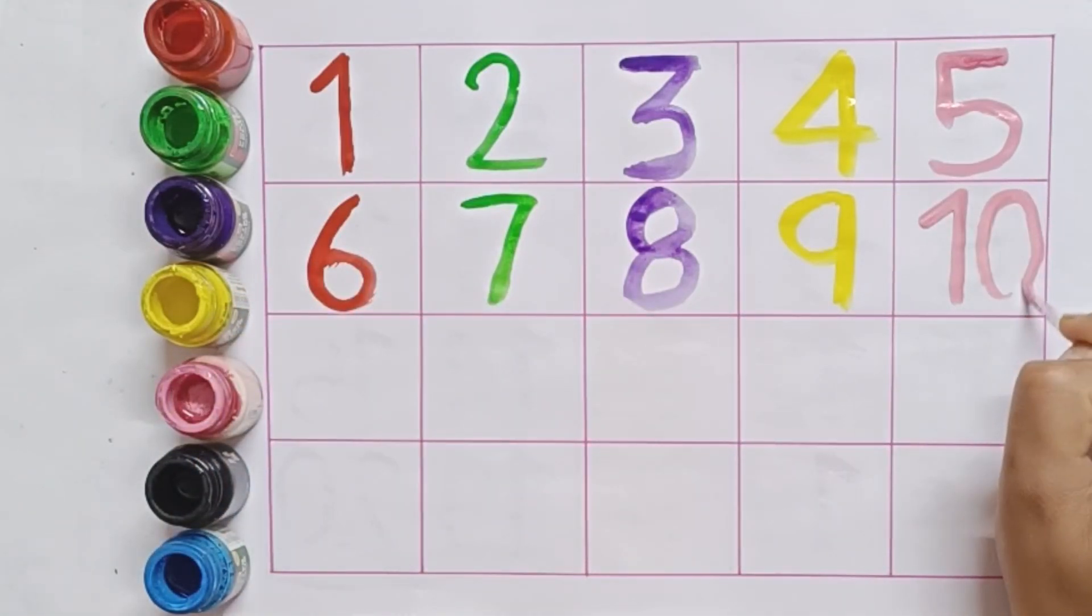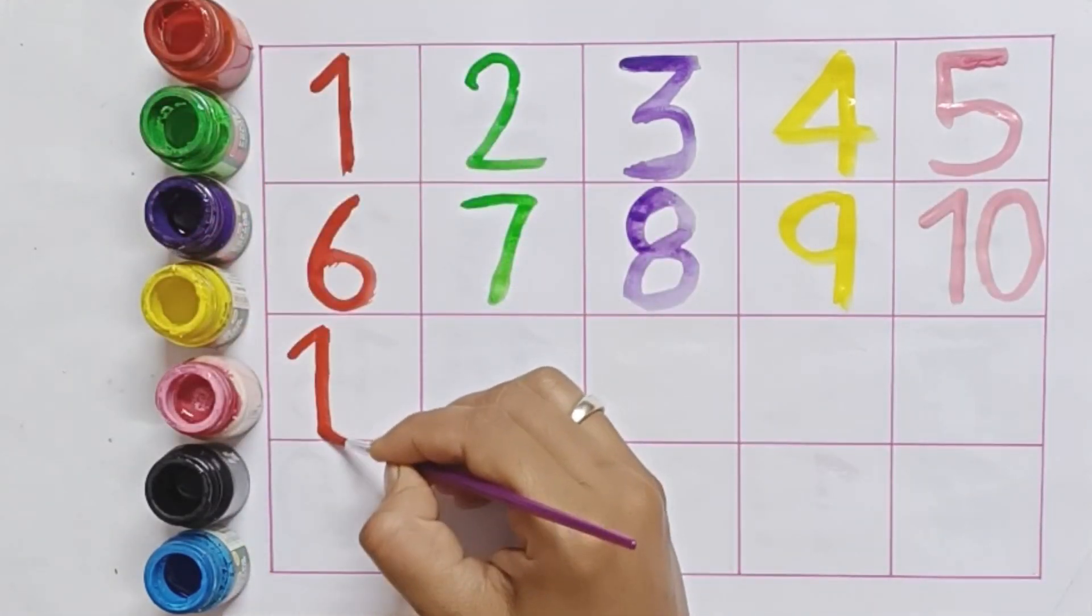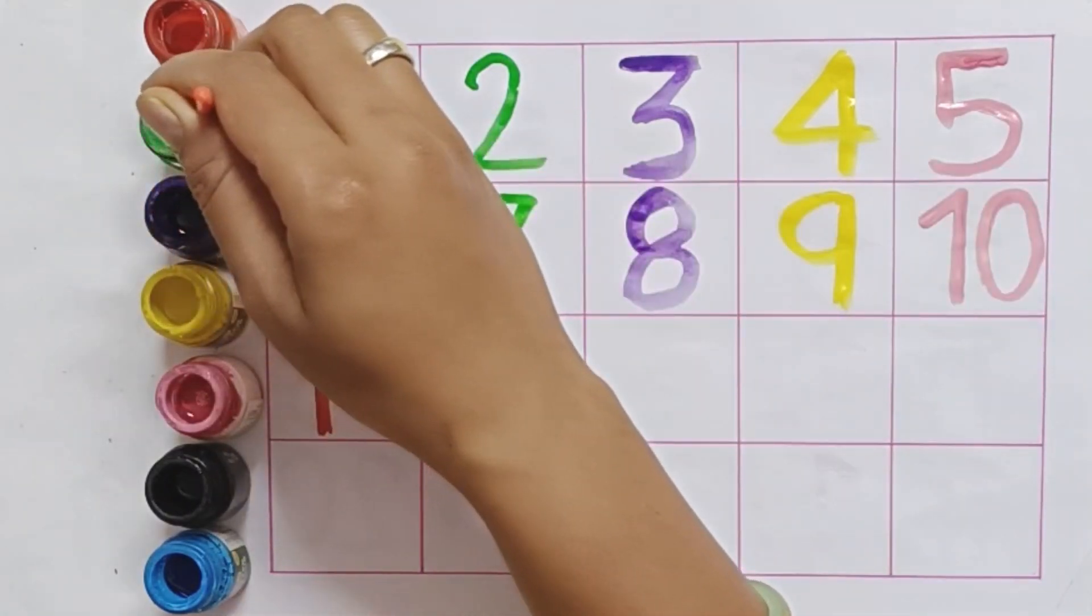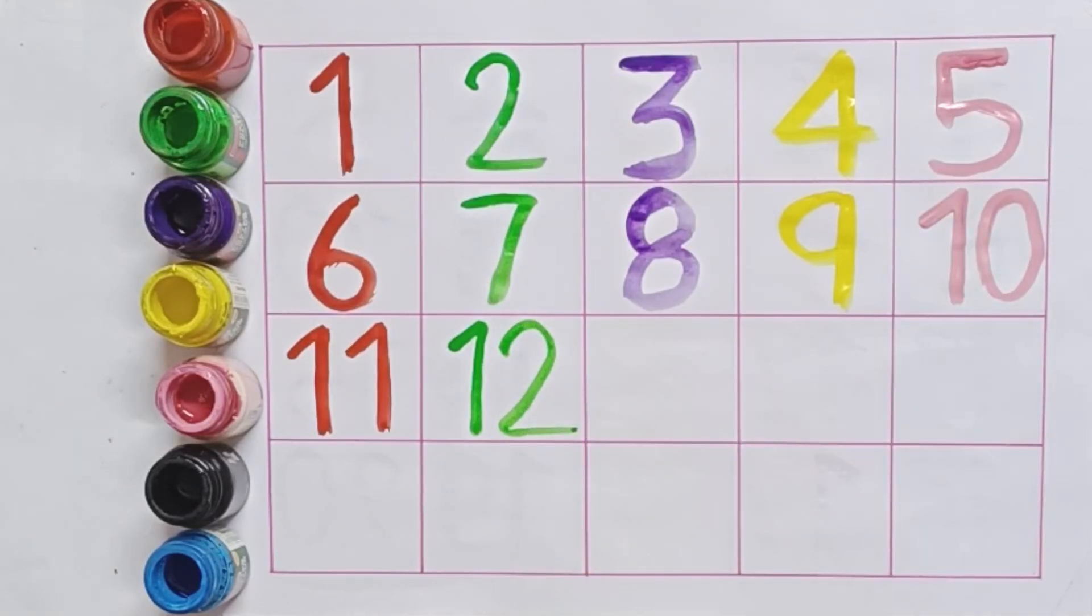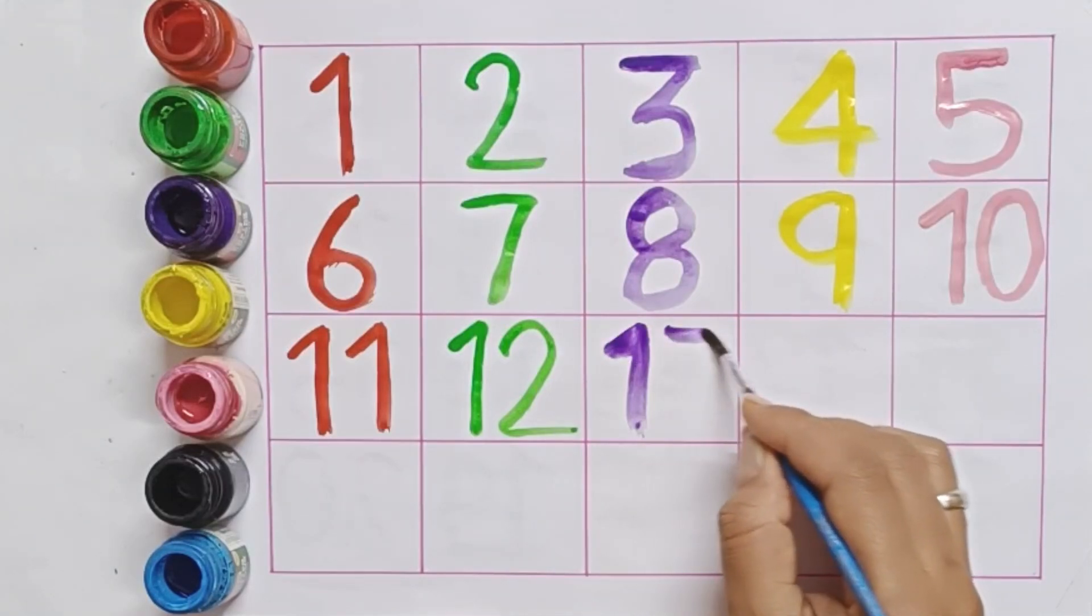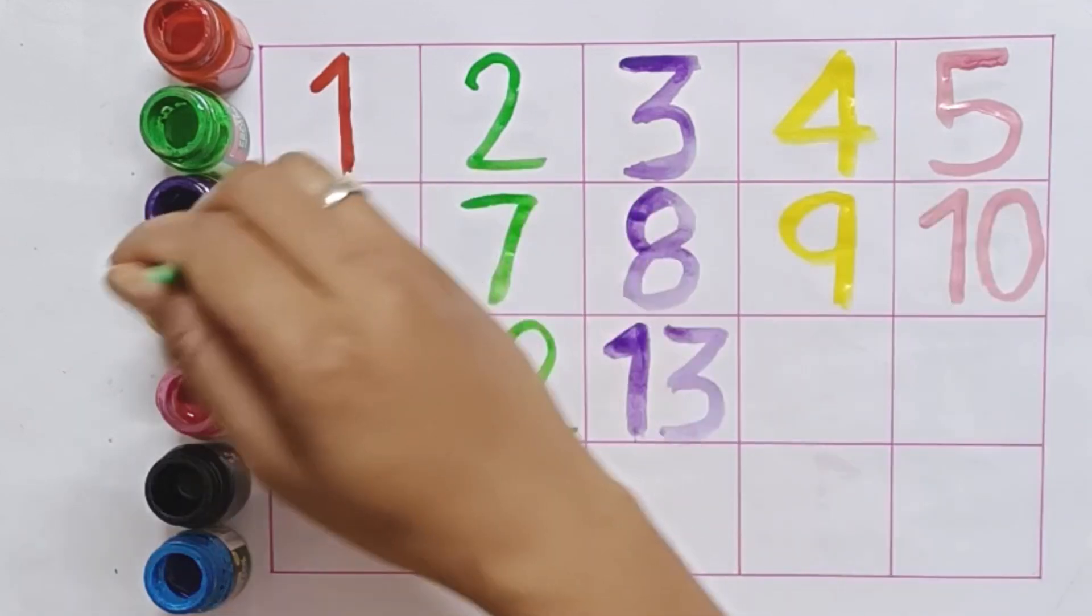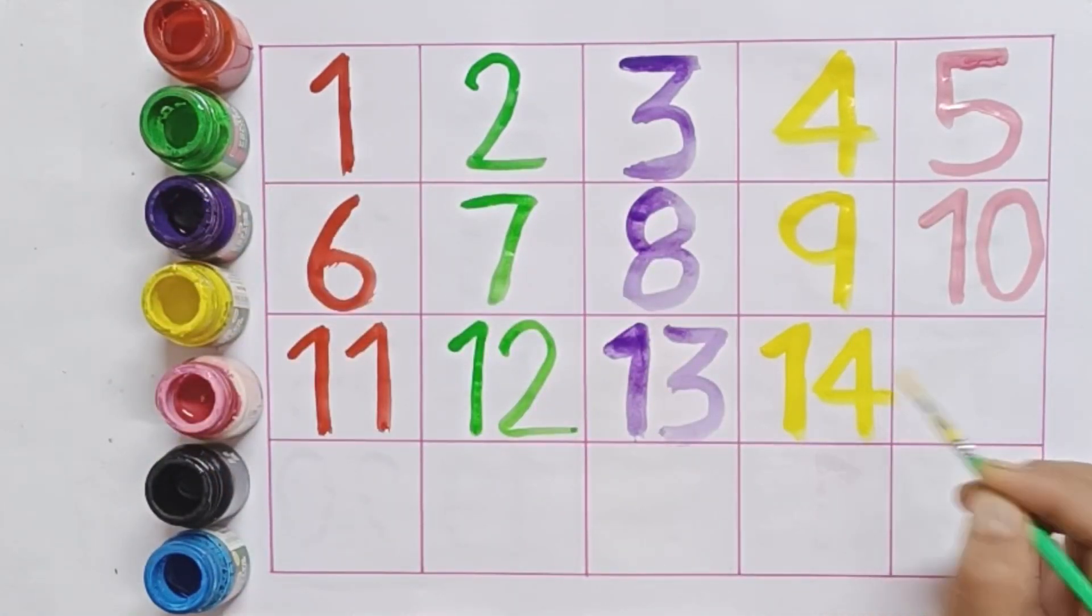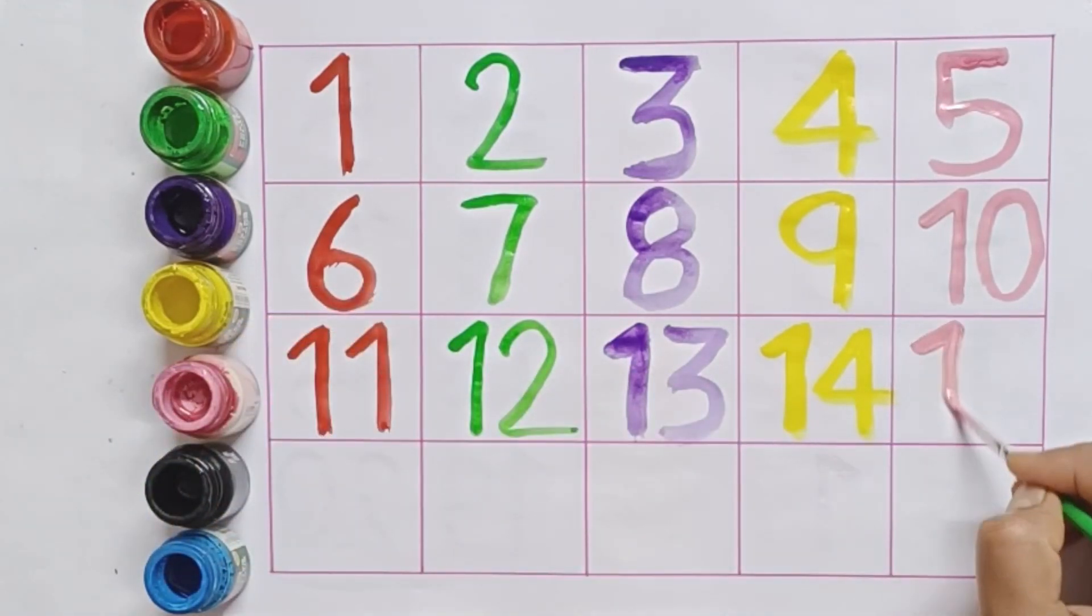11. E-L-E-V-E-N-11. 12. T-W-E-L-V-E-12. 13. T-H-I-R-T-E-E-N-13. 14. F-O-U-R-T-E-E-N-14. 15. F-I-F-T-E-E-N-15.